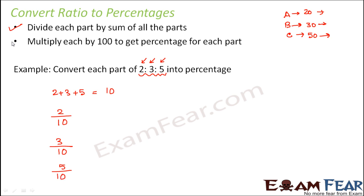Step 2 is multiply each by 100 to get percentage for that part. So you multiply this by 100, multiply this by 100, multiply this by 100. So what do you get? In this case this would be 20, in this case this would be 30, and in this case this would be 50. So basically 20 percent, 30, and 50 respectively. So in this fashion you converted the ratios into percentage.